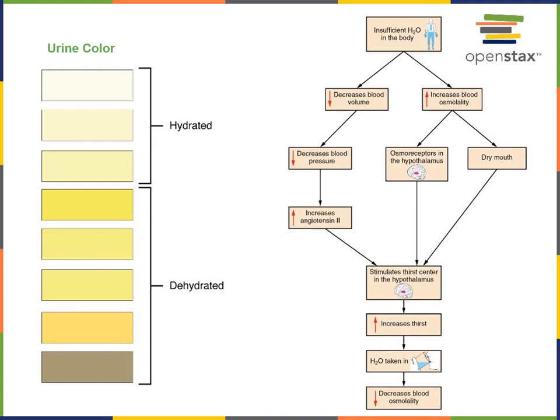A decrease in blood volume can also lead to decreasing blood pressure, which is a stimulus that activates the renin-angiotensin-aldosterone mechanism. Angiotensin 2 produces widespread vasoconstriction throughout the body. Similarly, antidiuretic hormone causes vasoconstriction as a mechanism to help increase blood pressure and maintain circulation despite decreasing blood volume during dehydration.